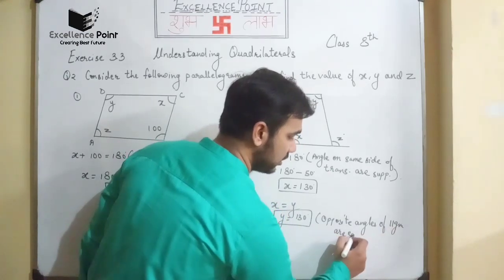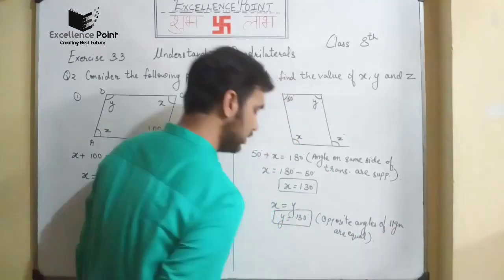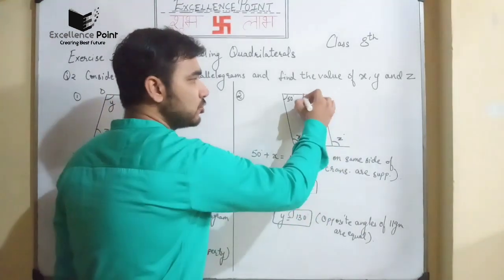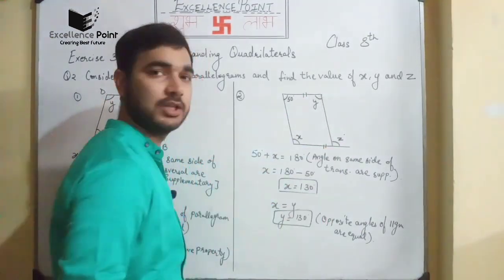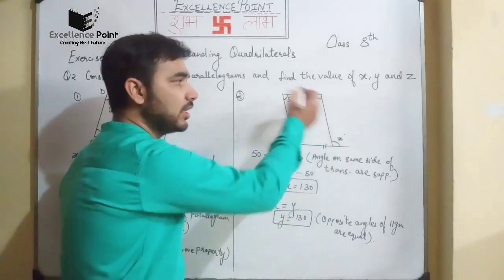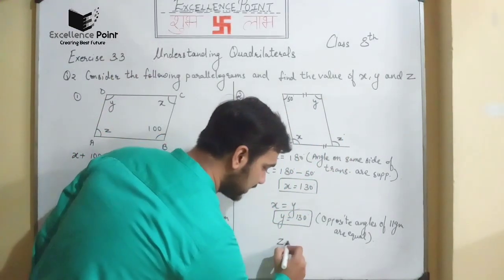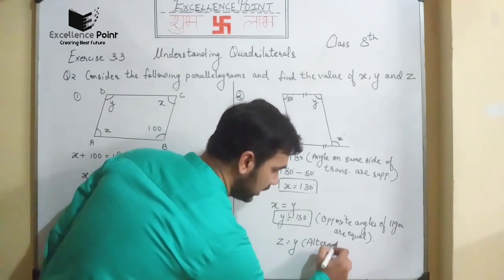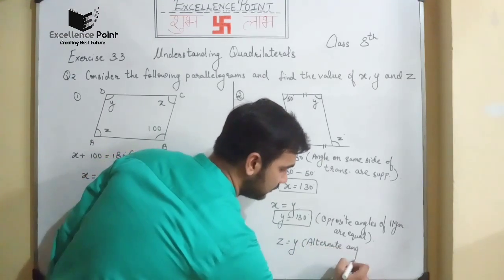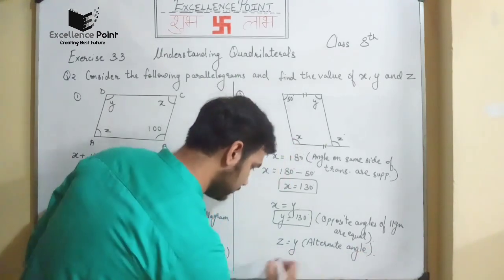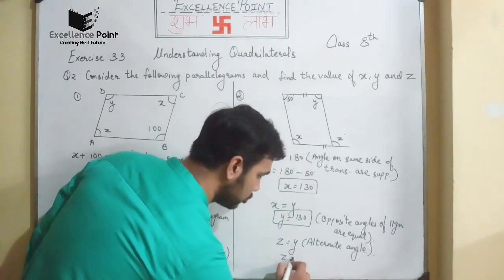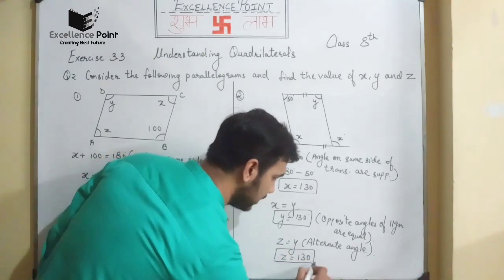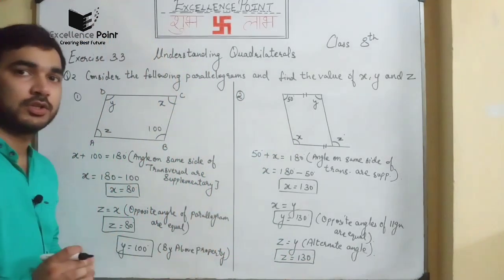Similarly for Z: these two lines are parallel to each other, so angle Z is the alternate angle. Therefore angle Z will also be equal to 130 degrees, and we have finished with the second diagram.